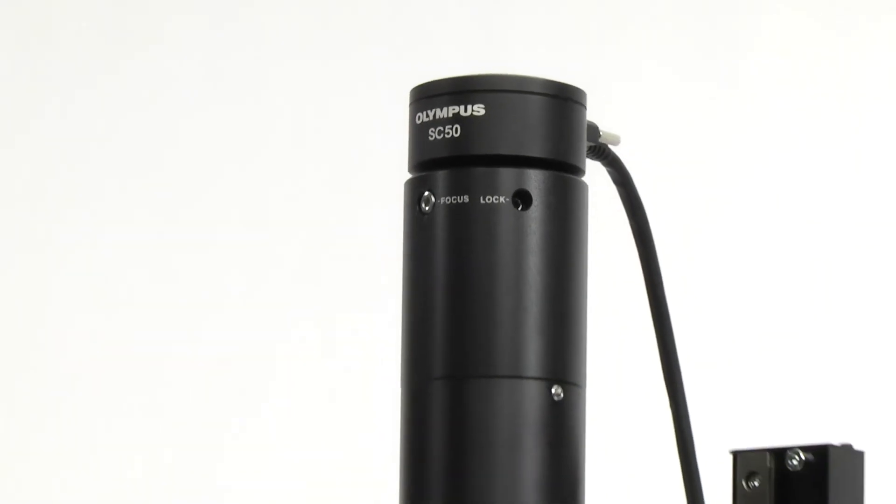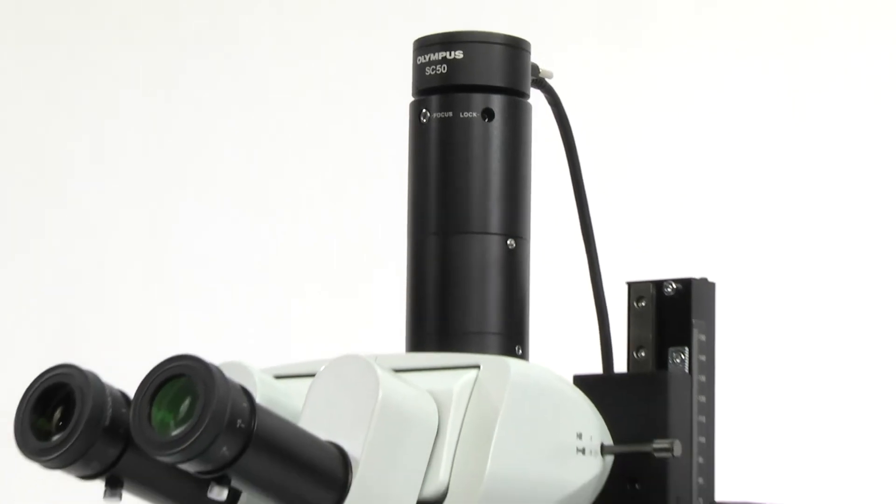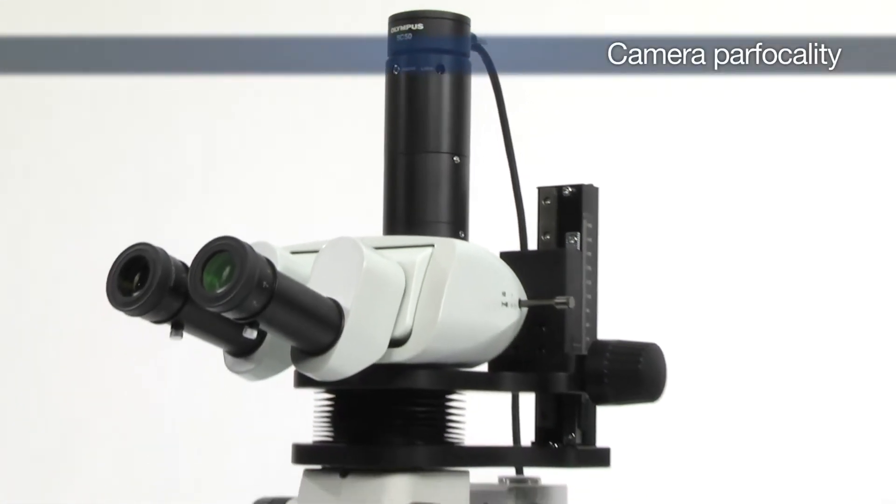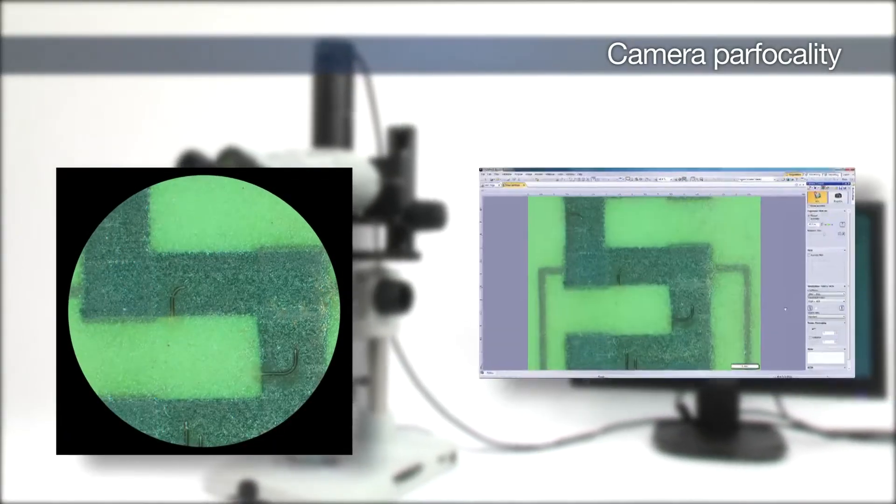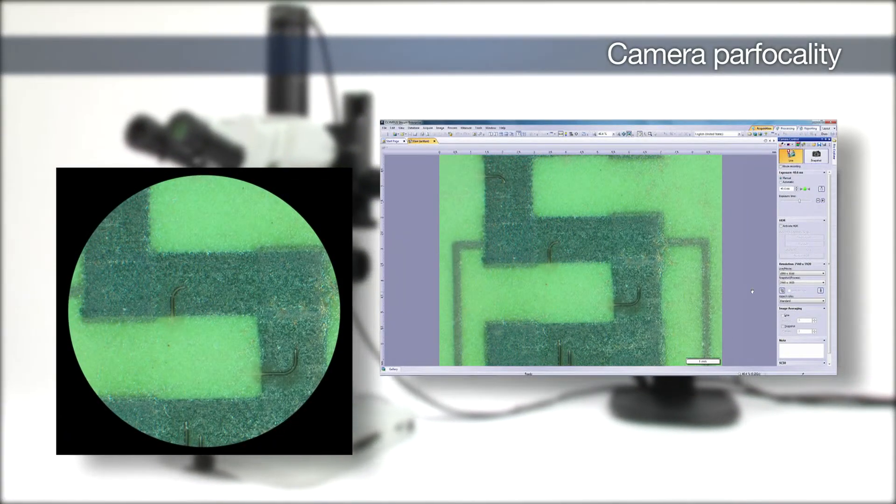For stereo microscopes equipped with digital imaging systems, proper camera parfocality is important to help ensure that the image viewed through the microscope and the image displayed on the monitor are in focus with each other.